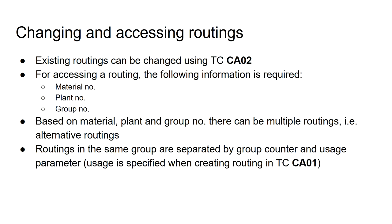Another thing I wanted to discuss is how you can access and change routings. In SAP PP there is a transaction for this: transaction code CA02. You can use this transaction for displaying, accessing, and changing routings. The information you will need is the material number, the plant number, and the group number. Using that information you can access a routing header.